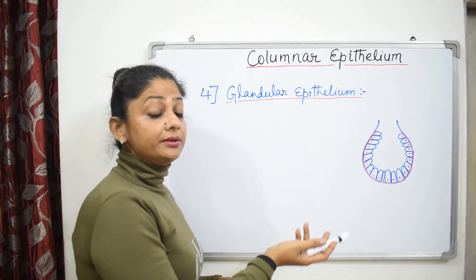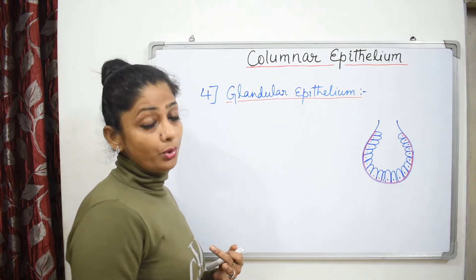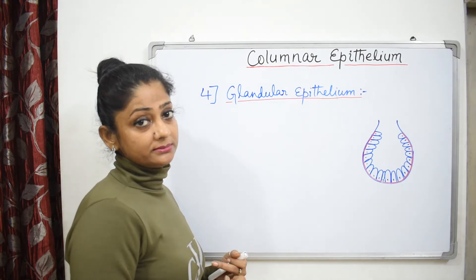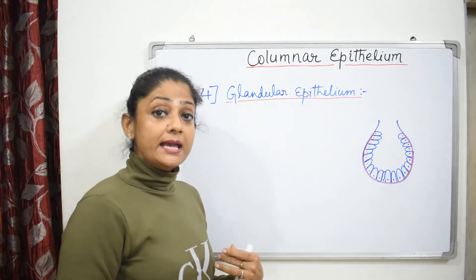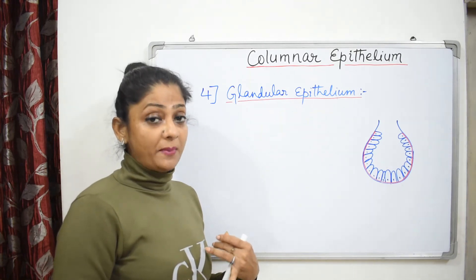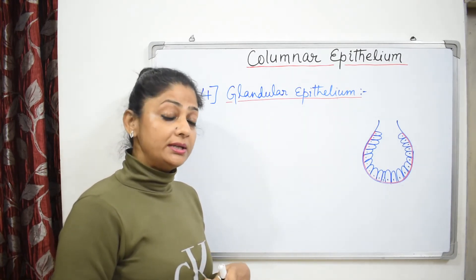These cells secrete different types of chemicals such as enzymes and hormones. And this glandular epithelium is found in the exocrine glands such as pancreatic gland, mammary gland, salivary gland, sweat gland, etc.